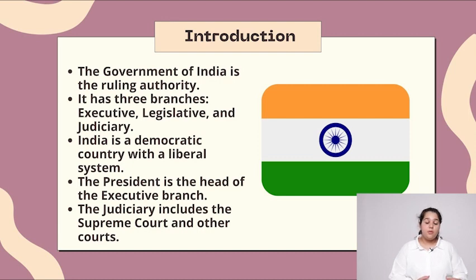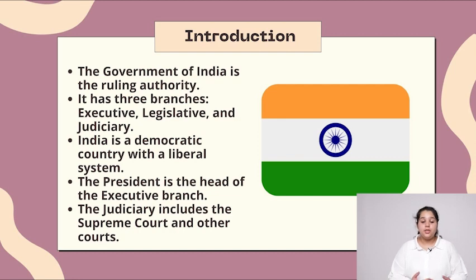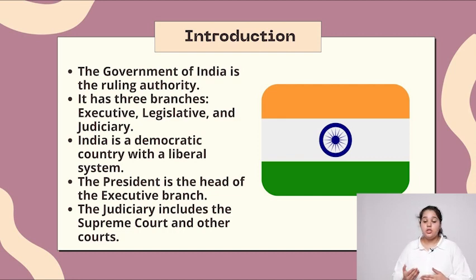Introduction. The government of India is the ruling authority. It has three branches: executive, legislature, and judiciary. India is a democratic country with a liberal system. The president is the head of the executive branch, and the judiciary includes the Supreme Court and other courts.